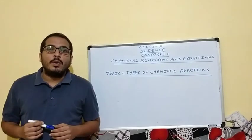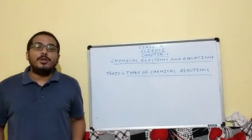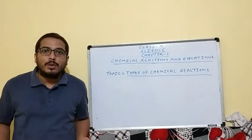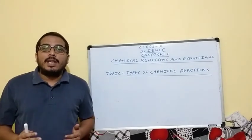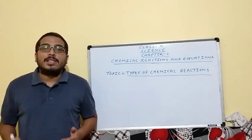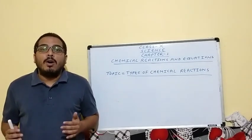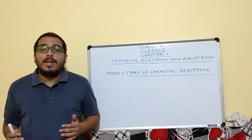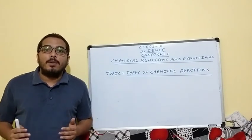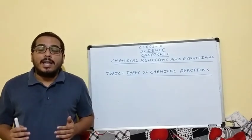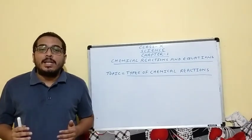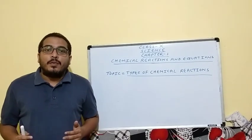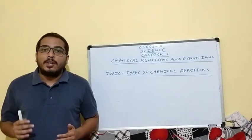Good morning students. Welcome back to my YouTube channel Science with Hemantra Atoor. In our previous class we discussed about how a chemical reaction is balanced. We took the example of iron — when iron reacts with steam it forms Fe3O4 and hydrogen gas.